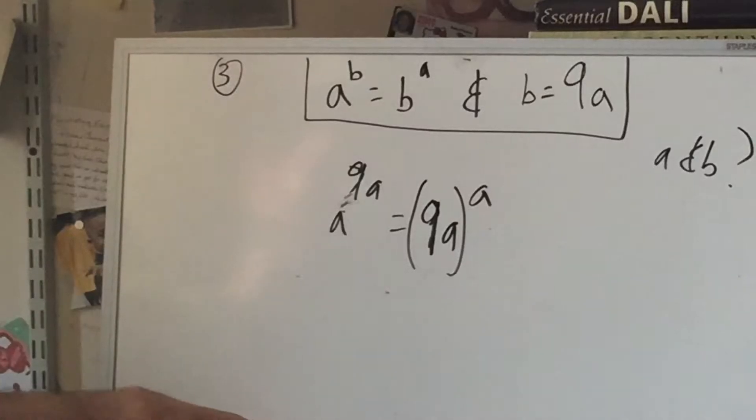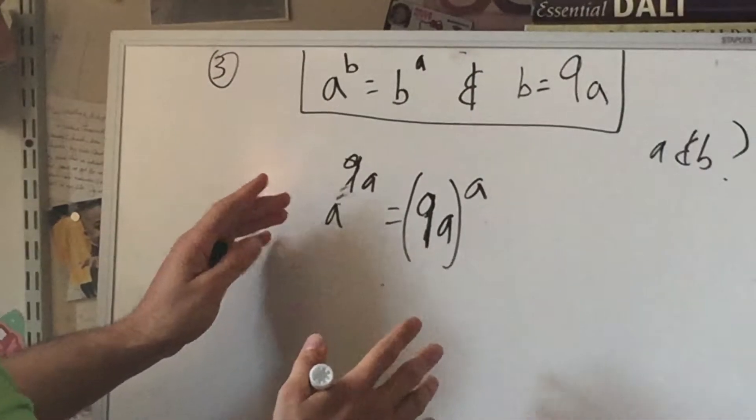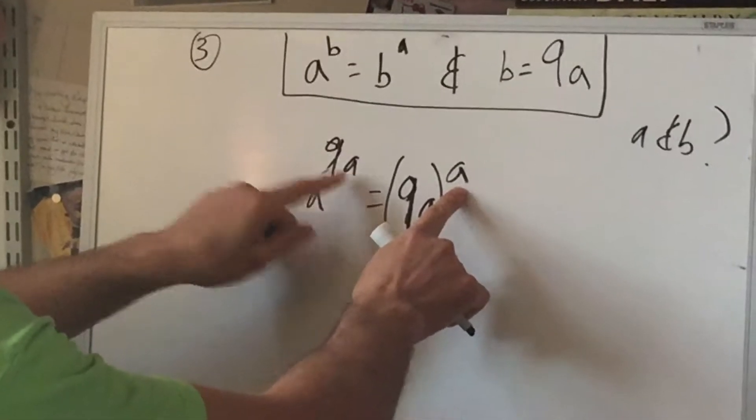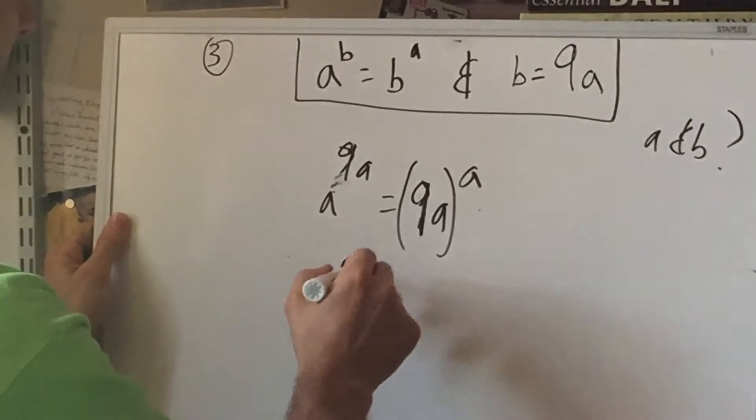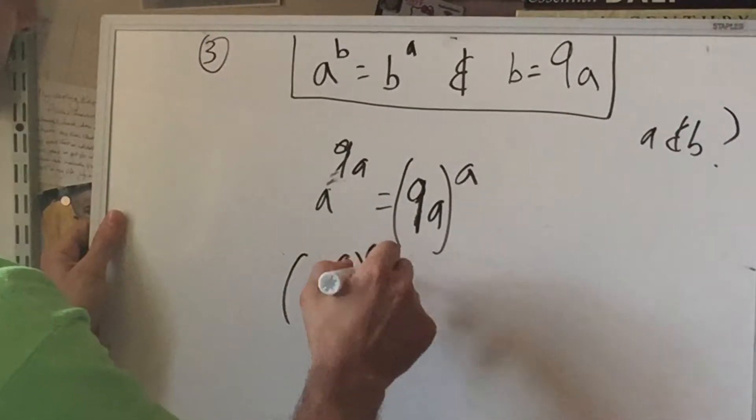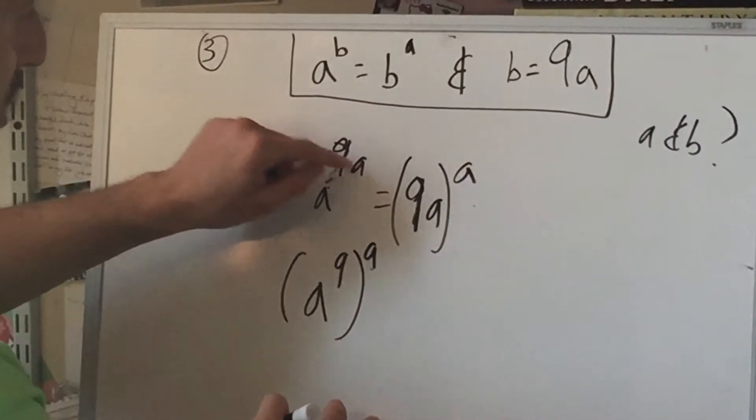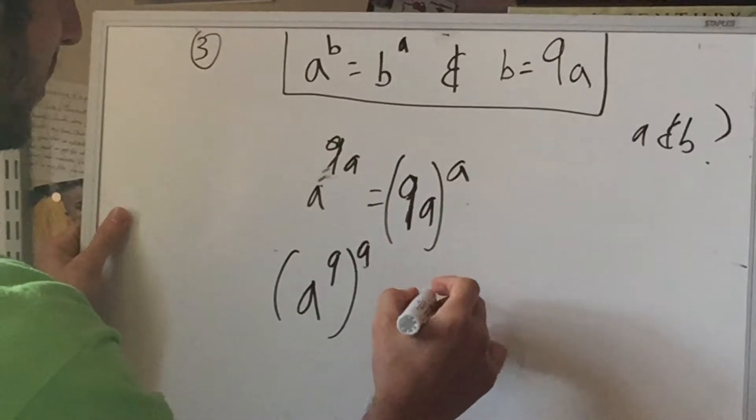Alright, so this looks like a nightmare so far. So let's see if we can reorganize this. Notice we have these A's. So we can rewrite this as A to the 9th to the A. Because a power to a power is you multiply the powers. That's the rule. So now for this one, let's just leave it for a moment.